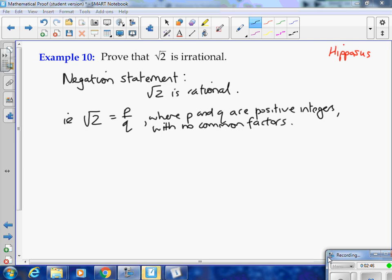So two parts to it: p and q are positive integers with no common factors. That's our definition, our precise definition of a rational number. Okay, so if that's the case, then if √2 equals p over q, we could say, let's square both sides.